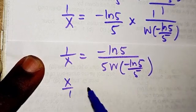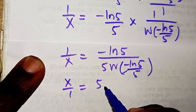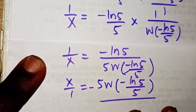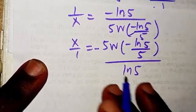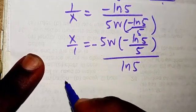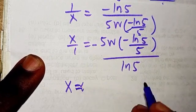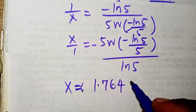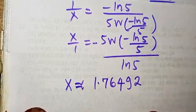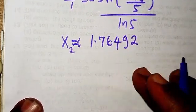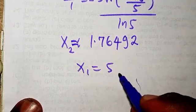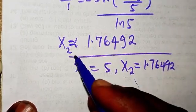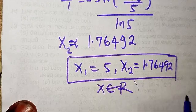Evaluating this numerically, x₂ is approximately equal to 1.76492. So our two solutions are x₁ = 5 and x₂ ≈ 1.76492. Both belong to the set of real numbers, as required by the problem.